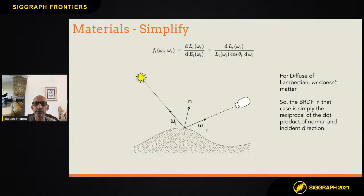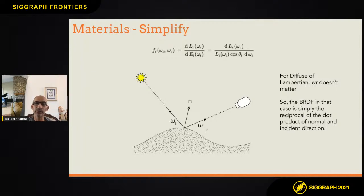For the Lambertian case we can simplify it — the outgoing direction doesn't matter, so it's only dependent upon the cosine of the angle from the normal to the light. I don't want to get into the deeper math of it, but just to give you an intuition of where the cosine theta comes from and how it is a specific solution to a more general equation.